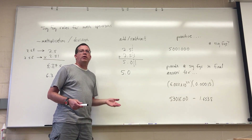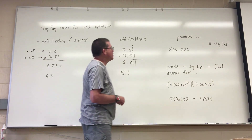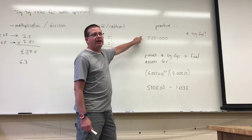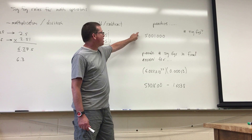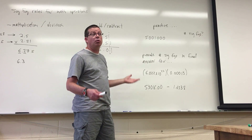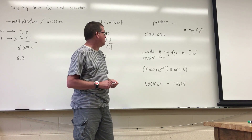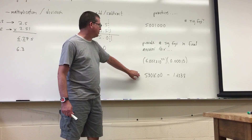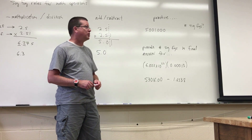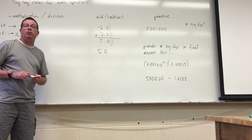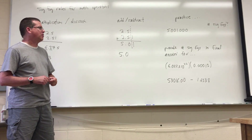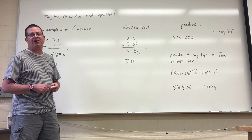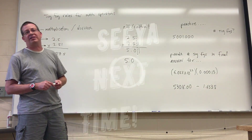For practice before the quiz on Wednesday, take a given number and determine the total number of significant figures using the rules covered. Also practice these two operations — the first being a multiplication and the second a subtraction — applying the appropriate sig fig rules to each operation and coming up with answers to the correct number of significant figures. We'll see you on Wednesday.